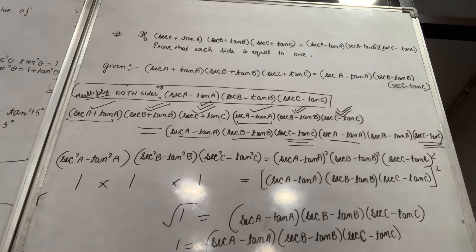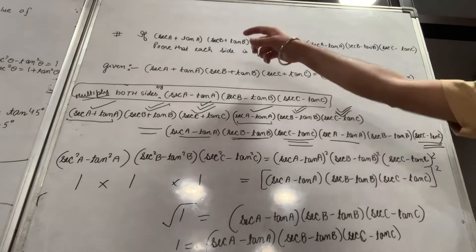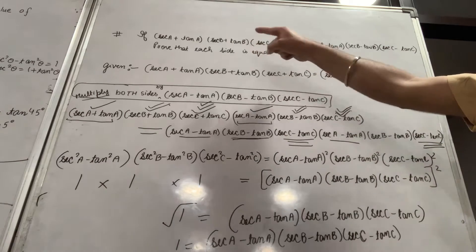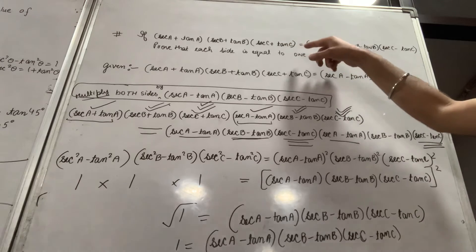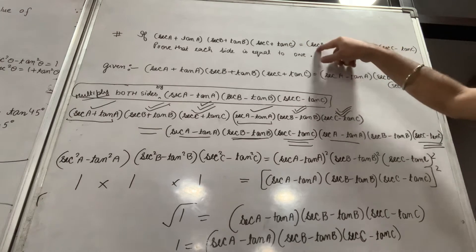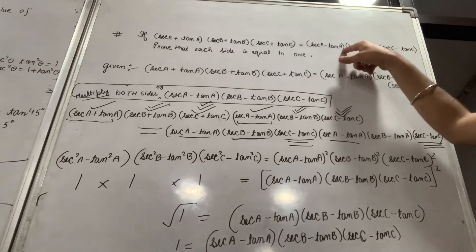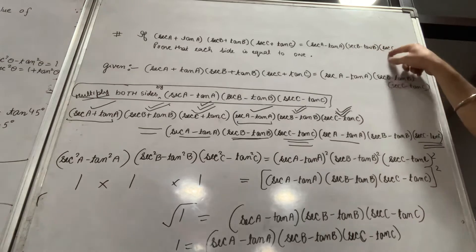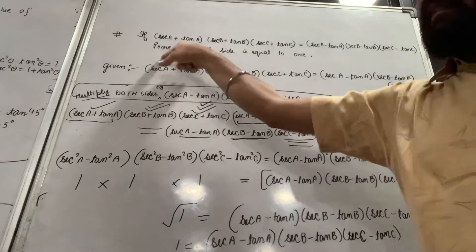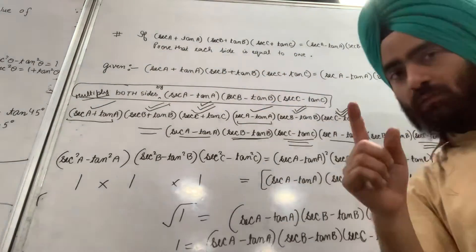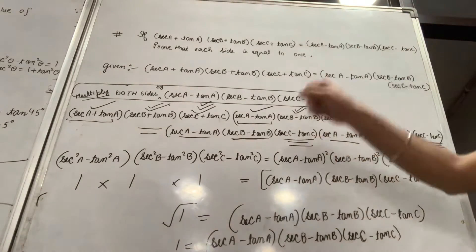Dear children, in this video I am going to cover an extra question of trigonometry. If (sec A + tan A)(sec B + tan B)(sec C + tan C) equals (sec A - tan A)(sec B - tan B)(sec C - tan C), prove that each side is equal to 1.